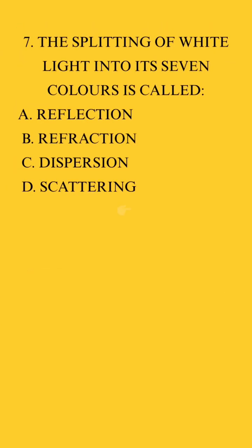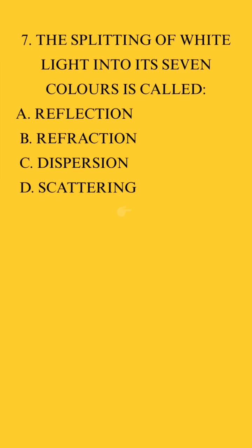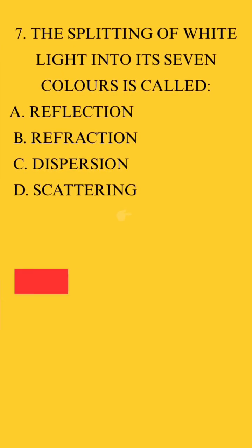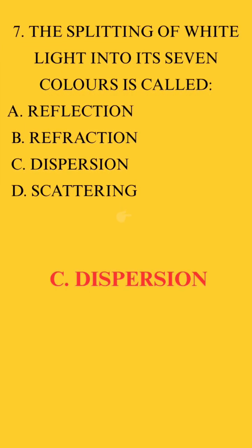7. The splitting of white light into its seven colors is called. c. Dispersion.